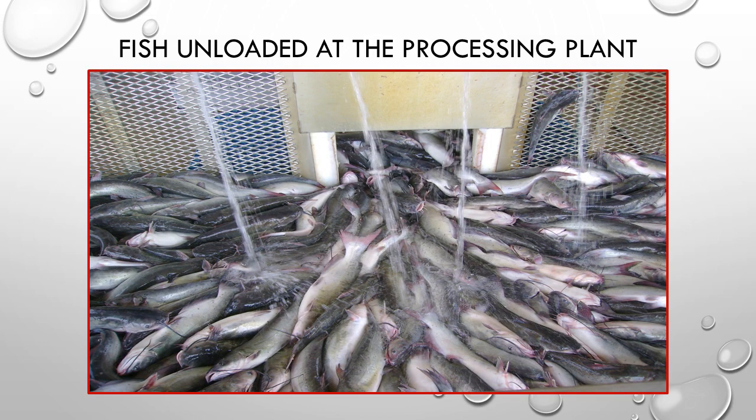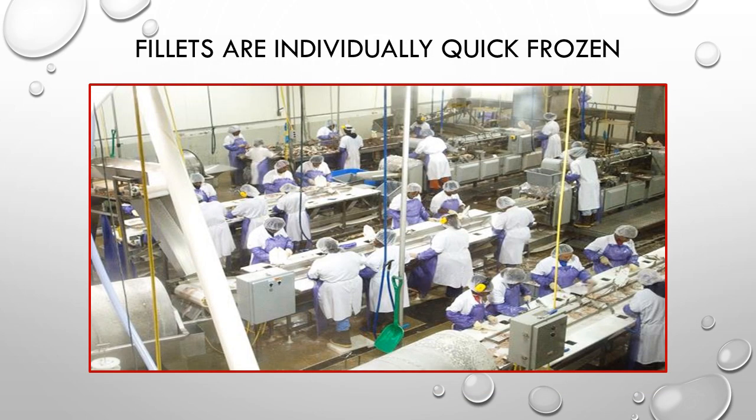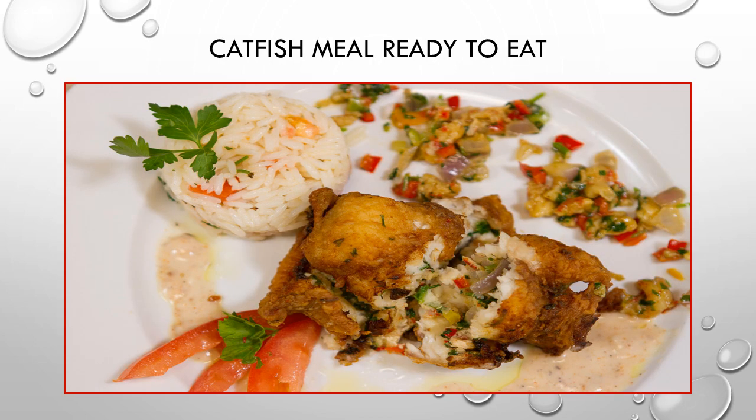Once the fish arrive at the processing plant they're unloaded, re-weighed, and processed into a variety of product forms. Some of the fish are shipped out fresh, but the majority is individually quick frozen for easy transport to distributors, restaurants, and seafood retailers. And eventually the catfish makes its way to your plate in a tasty dish like this one.